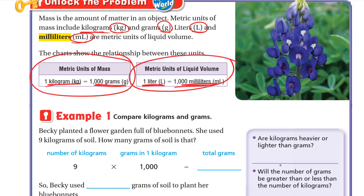These are really important — we will use them to solve all questions today. One kilogram is 1,000 grams. So for example, two kilograms equals 2,000 grams, and three kilograms equals 3,000 grams. It's like you multiply the number of kilograms by 1,000 to get the number of grams.